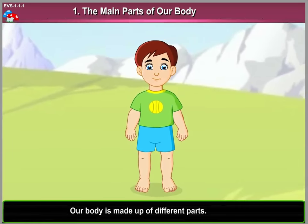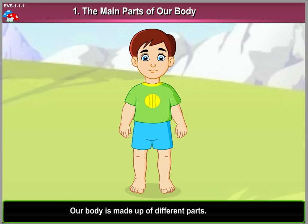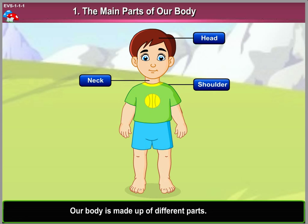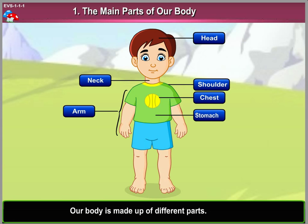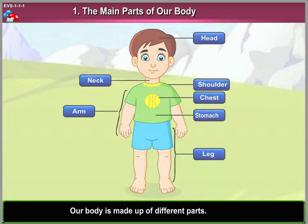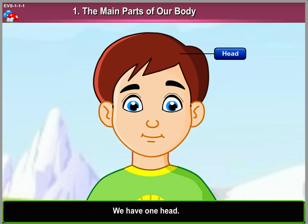Our body is made up of different parts. The main parts of our body are the head, neck, shoulders, chest, stomach, arms, and legs. We have one head.